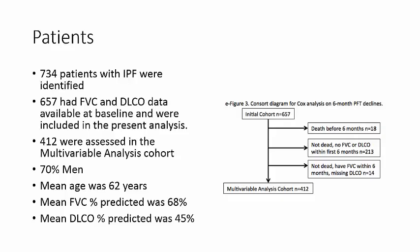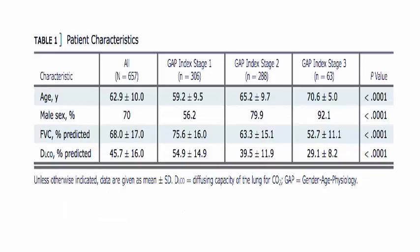Of the 412 patients, 70% were male, the majority were older with a mean age of 62 years, mean FVC was 68% predicted, and mean DLCO was 45% predicted. When categorized by GAP stage, FVC and DLCO were both lower with higher GAP stages, as expected.